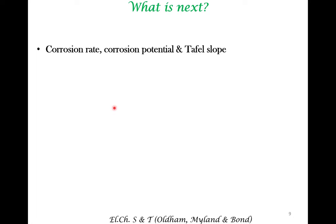We will shift gears in the next lecture and go from thermodynamics to some rate information, which will give an important aspect of corrosion — especially in terms of defining what we mean by corrosion potential. We will reconnect with a topic from a previous lecture — the Tafel slope — and see how it is going to be useful in the context of corrosion. We will look at these topics in the next lecture. Thank you.